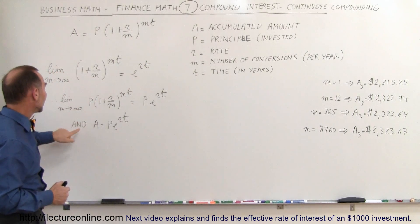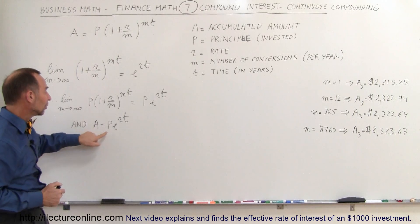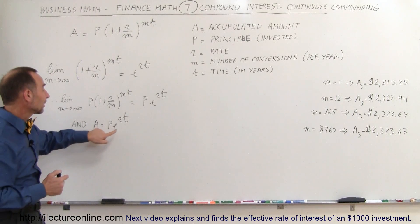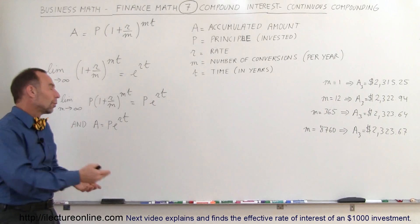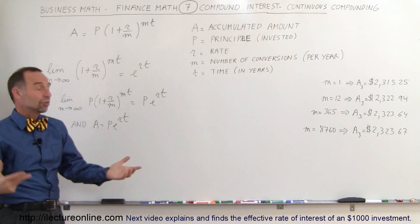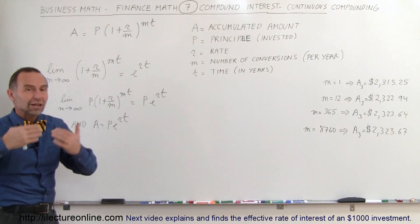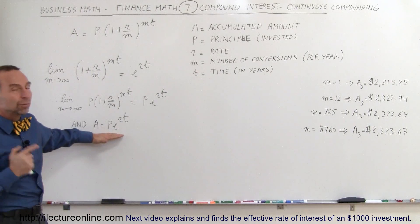So I'm going to put a P in front of it. We can then say that the accumulated amount is equal to P, the principal invested, times E to the RT. So bacteria grow at this rate, world population grows at this rate, anything that grows in a natural sense will grow exponentially like that.